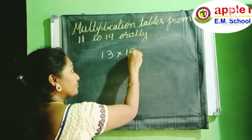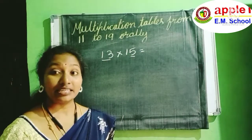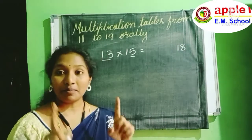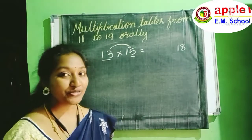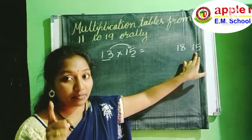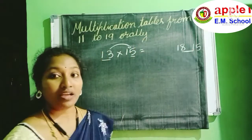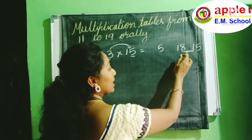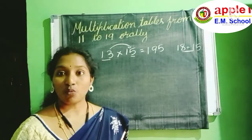Let us take one more example: 13 into 15. What is the first step? For 13, add 5. 13 plus 5 is 18. Next, multiply the ones place digits: 3 into 5 — three fives are 15. I am writing 15. See, 15 is a double digit number. Whenever you get a double digit number, we have to add the middle two numbers. Here the ones place is 5, the tens place is 8 plus 1 which is 9, and the hundreds place, write as it is. So the answer is 195.